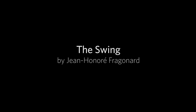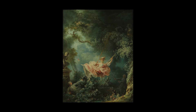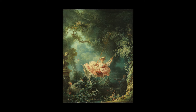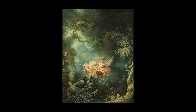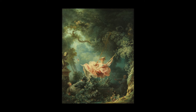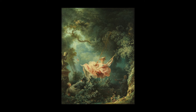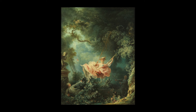This is an audio description of The Swing by Jean-Honoré Fragonard. The painting is oil on canvas. It measures approximately 81 by 64 centimetres and was painted between 1767 and 1768.